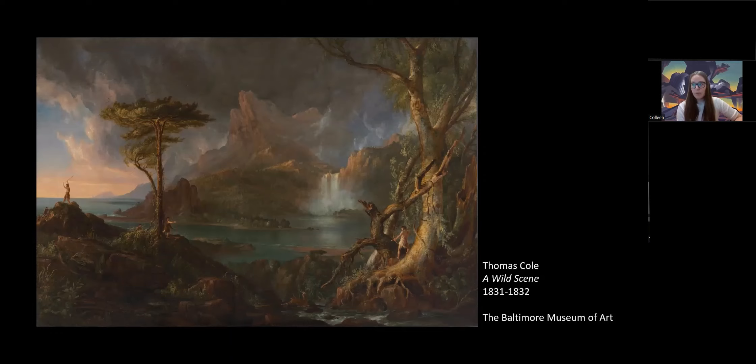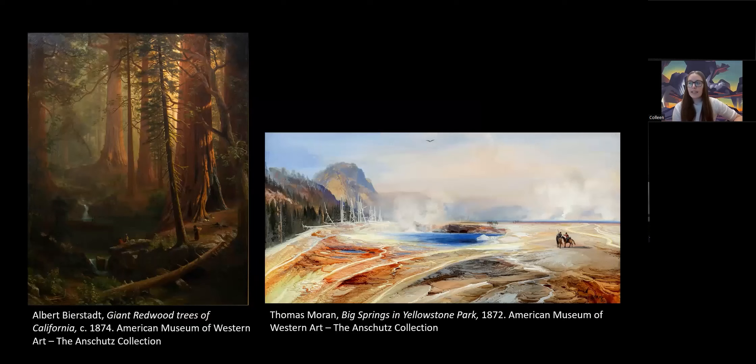Landscape painting was particularly popular in the United States in promoting manifest destiny and westward expansion, placing emphasis on the natural beauty of the American landscape. The first self-consciously American painters were landscape artists. The Hudson River School is the name used to identify New York-based landscape painters that emerged around 1850. These artists produced large-scale paintings and aimed to capture the grandeur and sublime nature of the natural world.